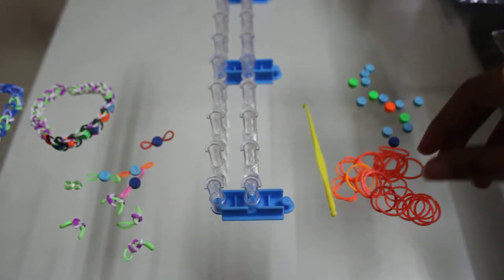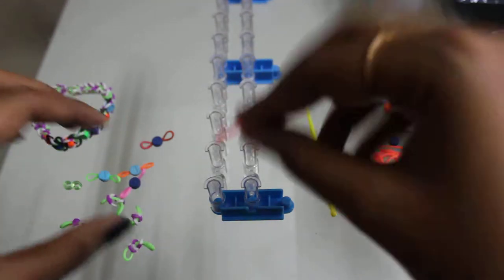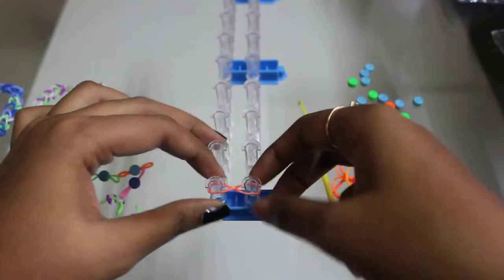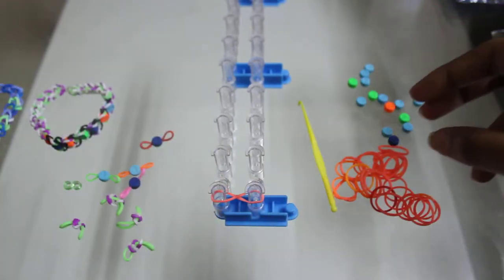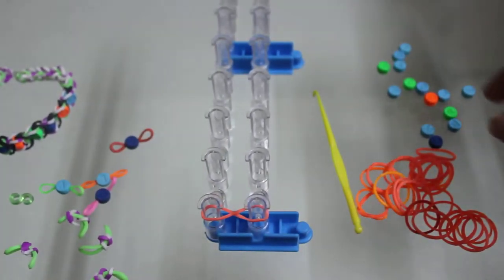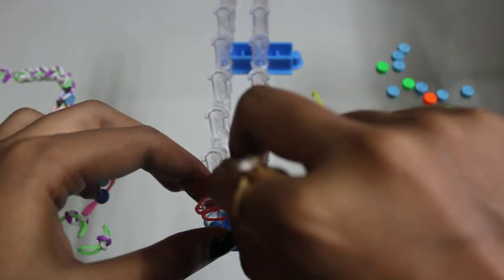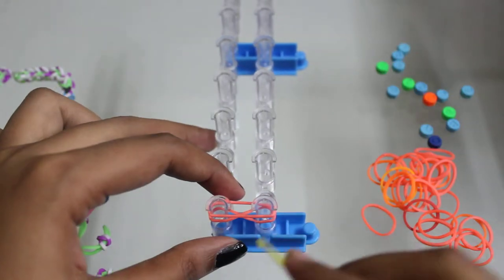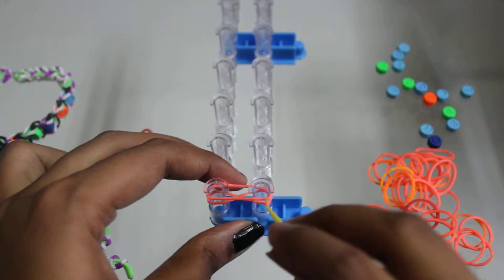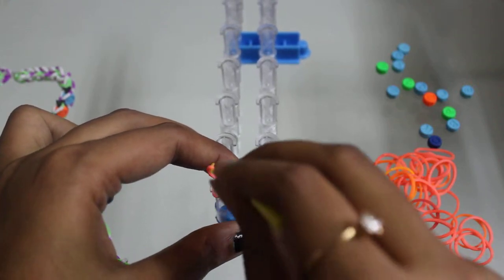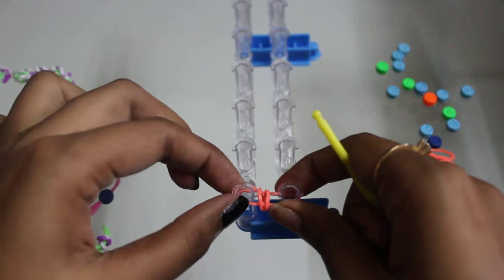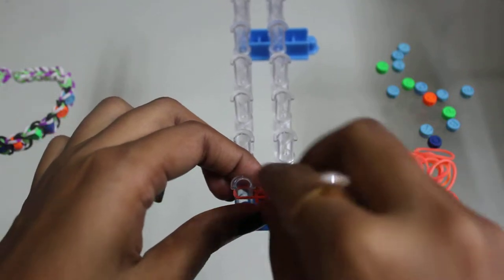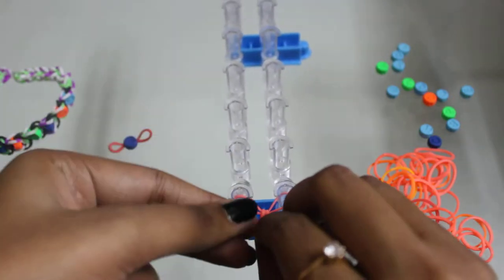Let's start the procedure. Like normally we do in our fishtail bracelet, take a rubber, place it, make a figure-8, push it down, then take another rubber band, place it normally, and bring it over like this. I suggest that you put the hook at the first itself.